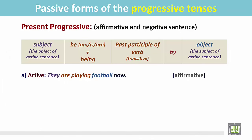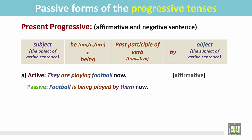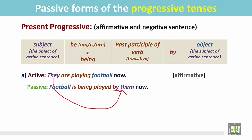See the examples. 'They are playing football now.' This is a statement in the affirmative form. 'They' is the subject, 'are' is the be verb as it is plural, and the main transitive verb is 'playing' with the object 'football'. The passive form: the object 'football' becomes the subject. It is a singular noun so we use 'is', then 'being', then the past participle form. The preposition 'by' and the subject 'they' become the object. Football is being played by them now.